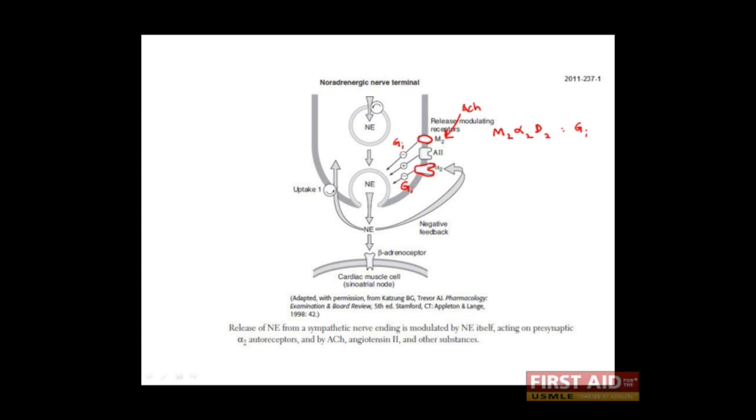So in summary, there are four ways to regulate or remove norepinephrine. The first is diffusion. The second is metabolism, and this occurs mostly by the enzyme monoamine oxidase. The third is reuptake. And the fourth is negative feedback.